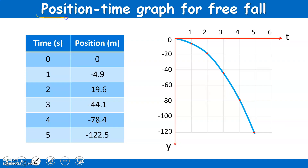Let's look at a position versus time graph — the change in position of the object as it's in free fall. We're starting at position zero. On the x-axis we have time, and on the y-axis we're measuring position. At time zero, position is zero. After one second, the position is negative 4.9 meters. At two seconds, negative 19.6 meters. At three seconds, negative 44.1. At four seconds, negative 78.4. And at five seconds, negative 122.5.